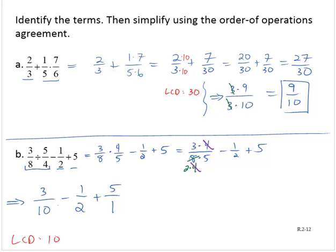I don't need to do anything with the 3 tenths. I need to multiply by 5 in the second fraction, so that would give me 5 tenths. And I need to multiply by 10 in the third fraction, and that would give me 50 tenths.